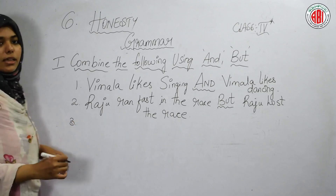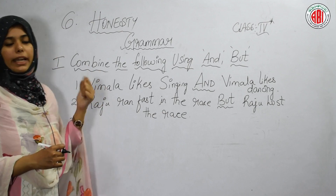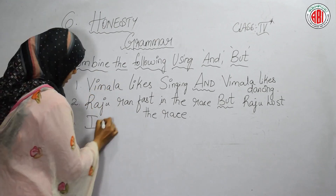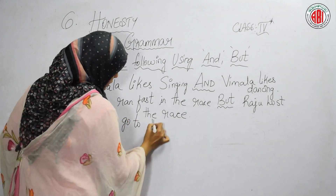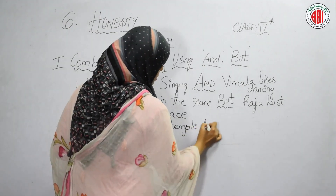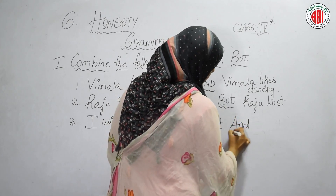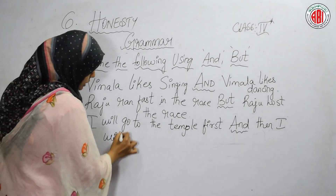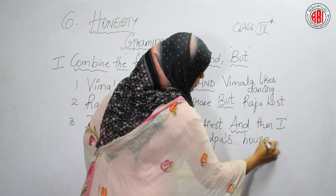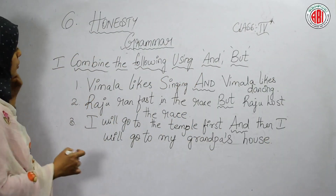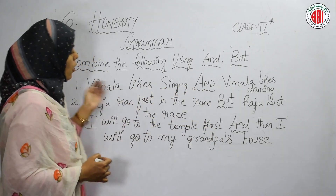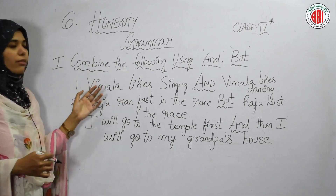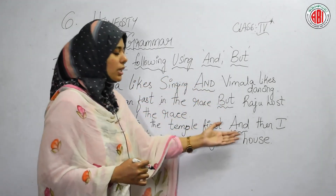The third sentence: 'I will go to the temple first' and 'I will then go to my grandpa's house.' We combine them: 'I will go to the temple first and then go to my grandpa's house.' In the reader, two sentences were given, and we combined them into one by using the conjunction 'and'.